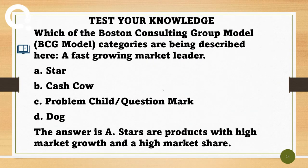Which BCG model category is being described here: a fast-growing market leader? A. Star. B. Cash Cow. C. Problem Child / Question Mark. D. Dog. The answer is A. Stars are products with high market growth and a high market share.